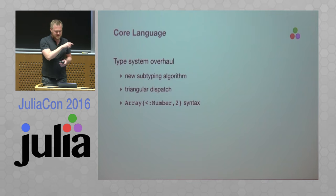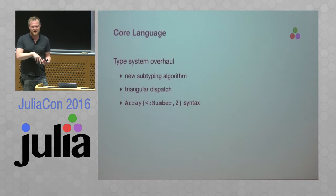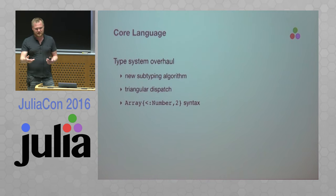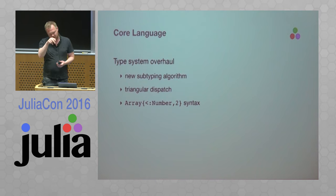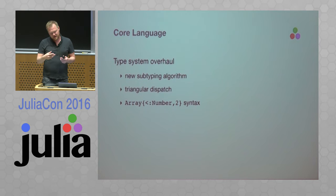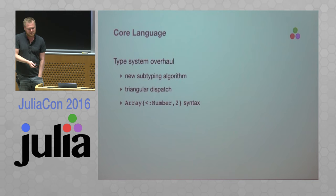One thing that falls out of this is the ability to leave out a type parameter and talk about, for example, a matrix as Array with only the second parameter specified as 2. We could write syntax like Array with angle-bracket colon Number, meaning a two-dimensional array whose element type is Number. That'll clean up some code.